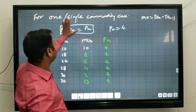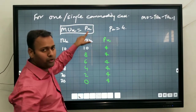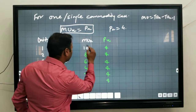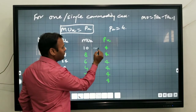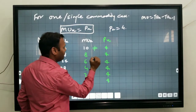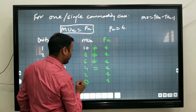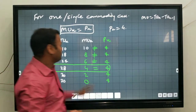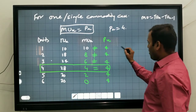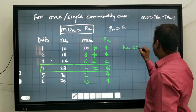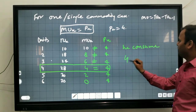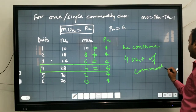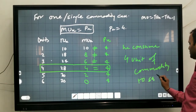Now we apply the formula: MUX is equal to PX. We look for where MUX equals PX. For the first unit, 10 is not equal to 4. Continuing down the table, we find that at the 4th unit, MUX equals 4, which equals PX. So the consumer consumes 4 units of the commodity to satisfy his wants.